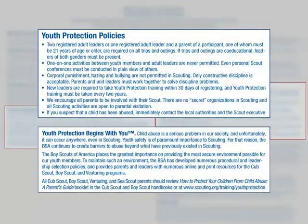Youth protection policies must be followed. It's vital that the parent review How to Protect Your Children from Child Abuse: A Parent's Guide. Key youth protection policies include: two adults are required on all trips and outings; one-on-one activities between youth and adults are never permitted; corporal punishment, hazing, and bullying are not permitted. There are no secret organizations in scouting, and if a parent suspects that a child has been abused, they should immediately contact the local authorities and the scout executive.